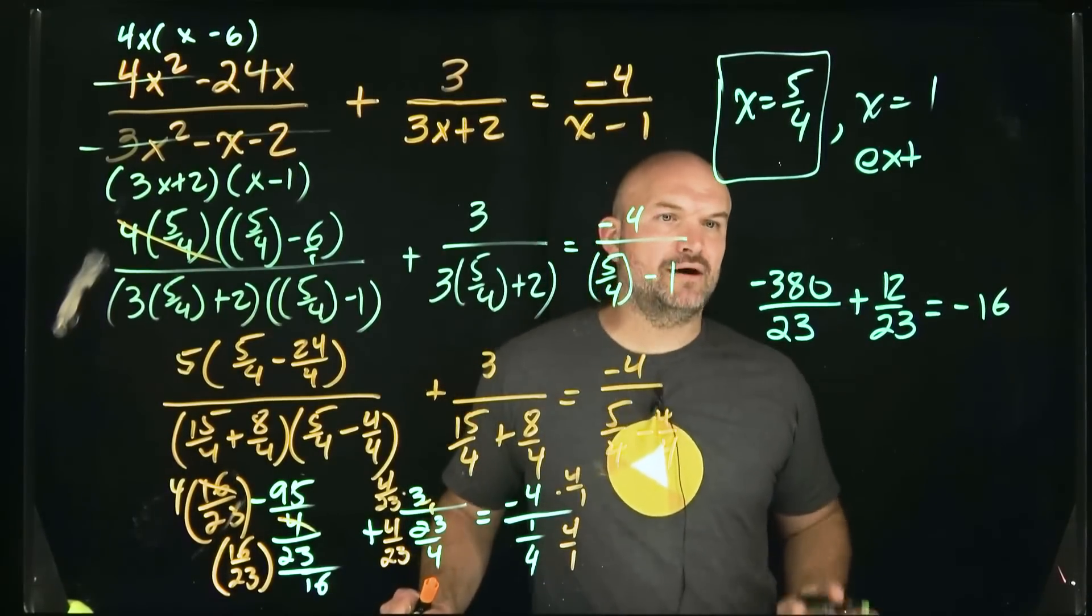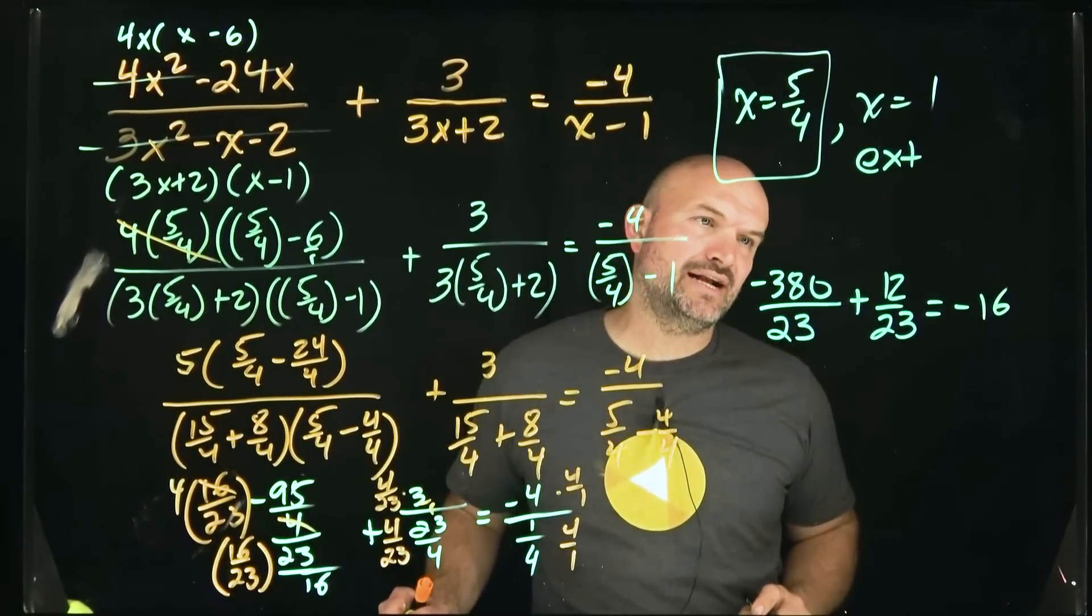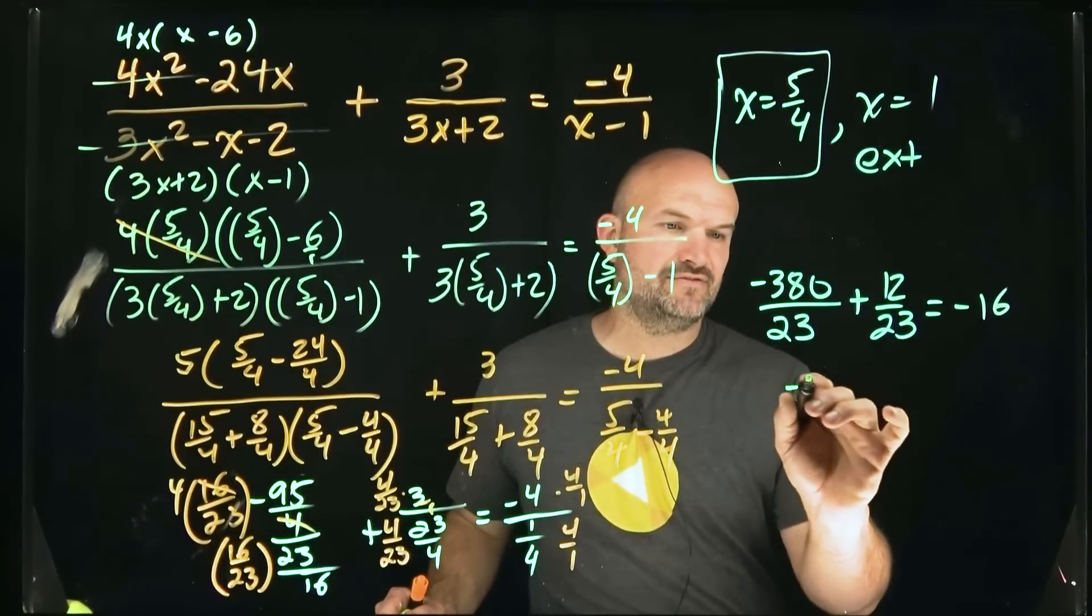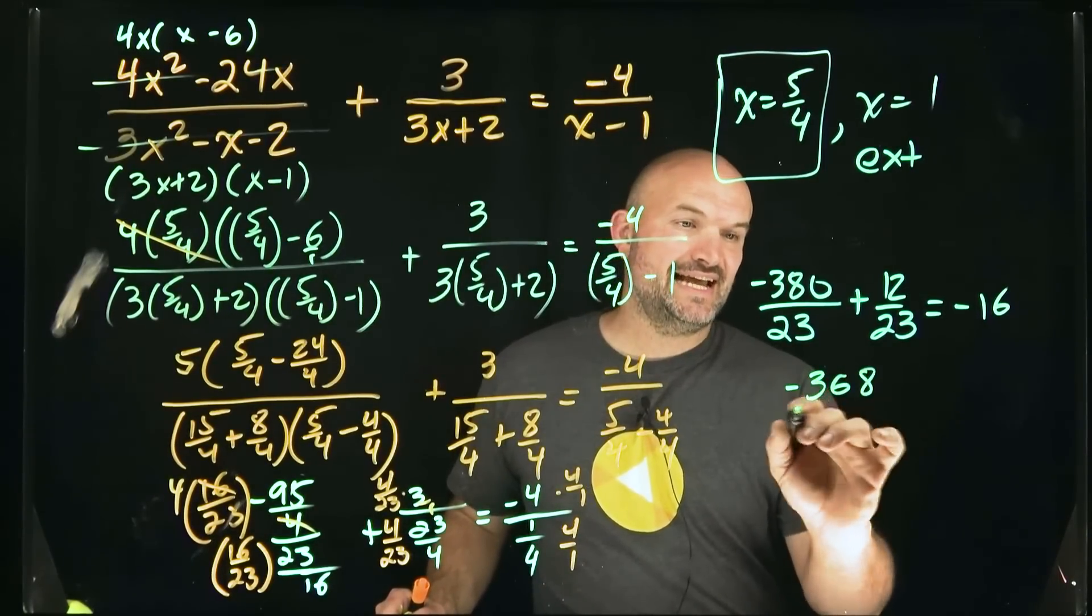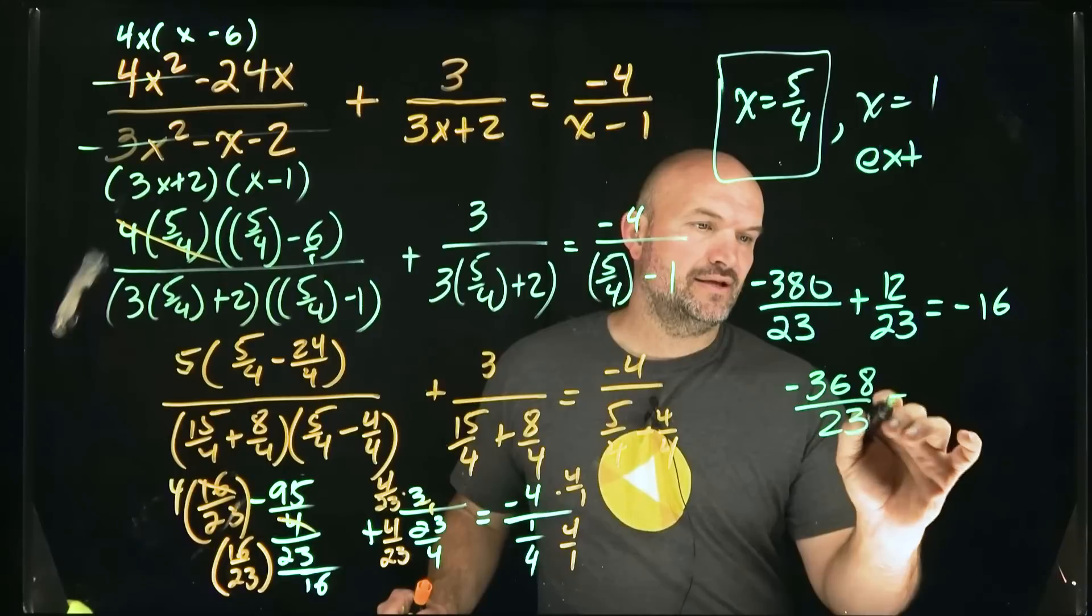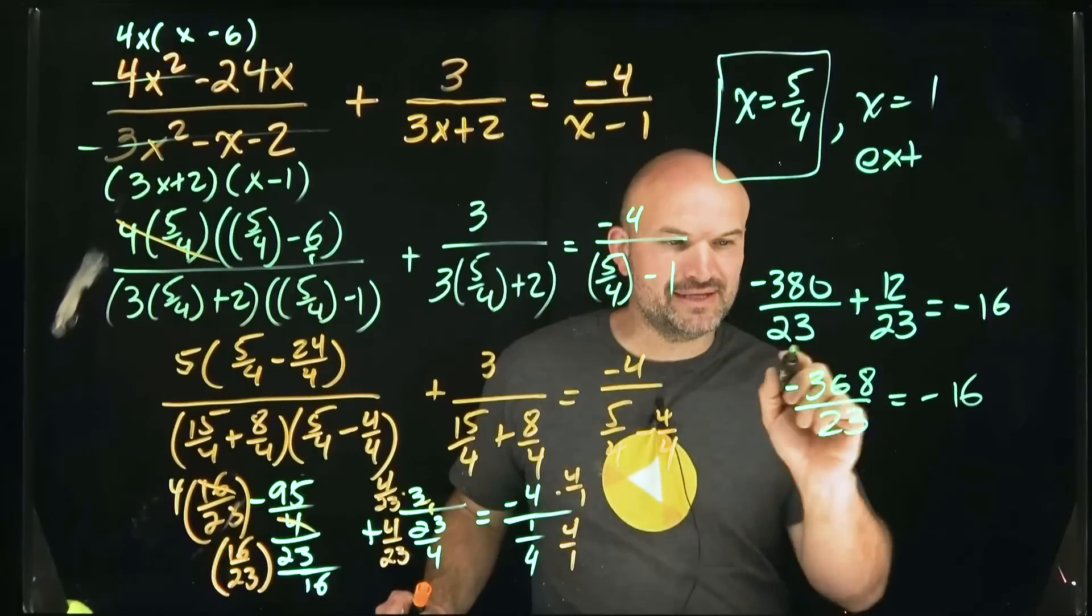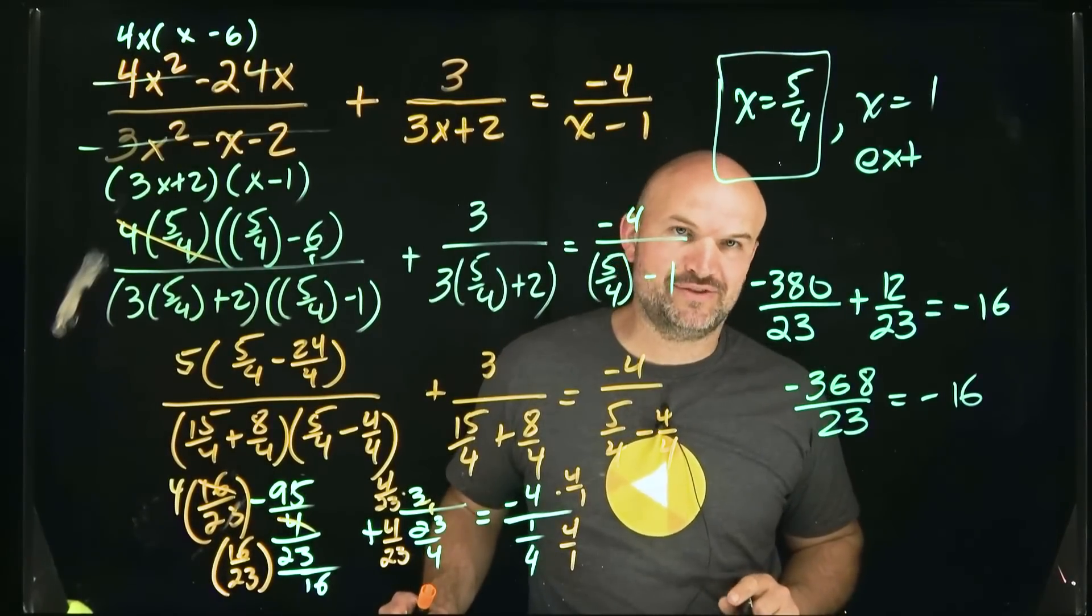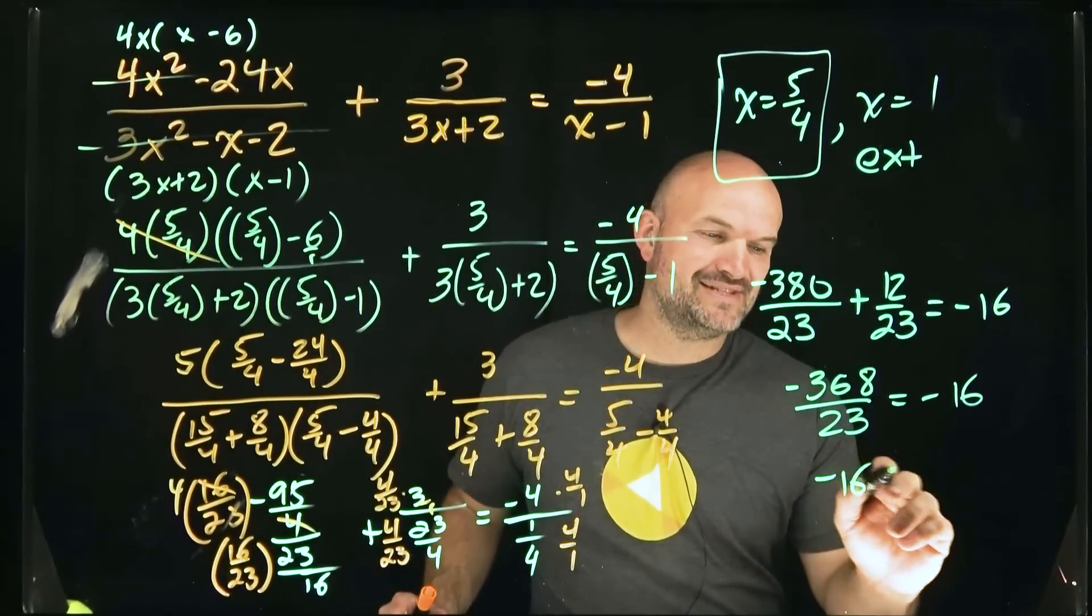So now what I need to do is add negative 380 plus 12. That's going to be negative 368 divided by 23 is equal to negative 16. And guess what, ladies and gentlemen, negative 368 divided by 23 is, you're right, negative 16.